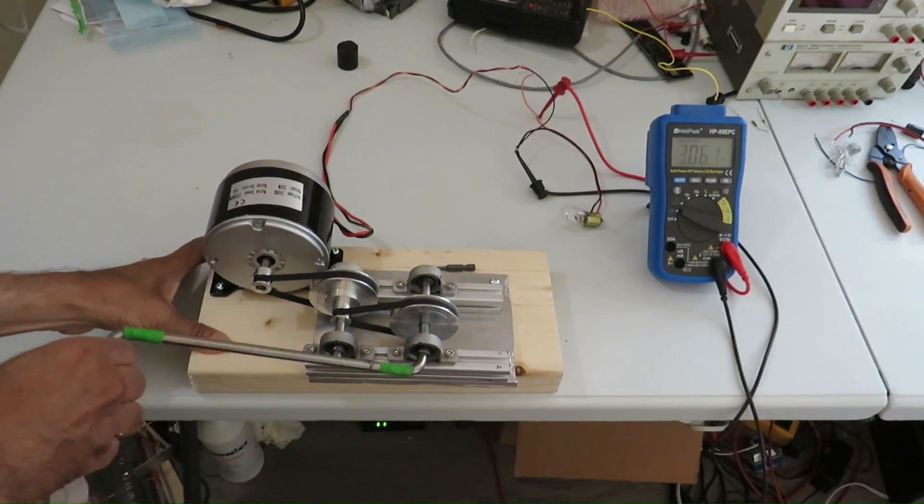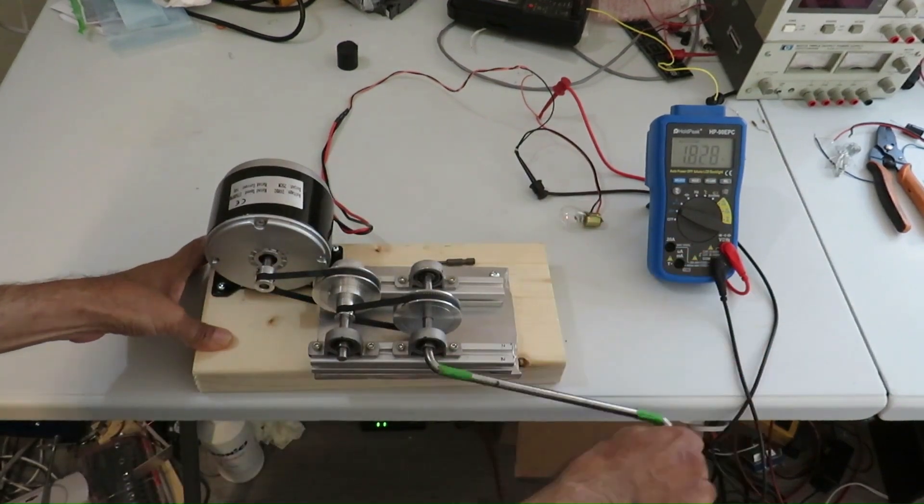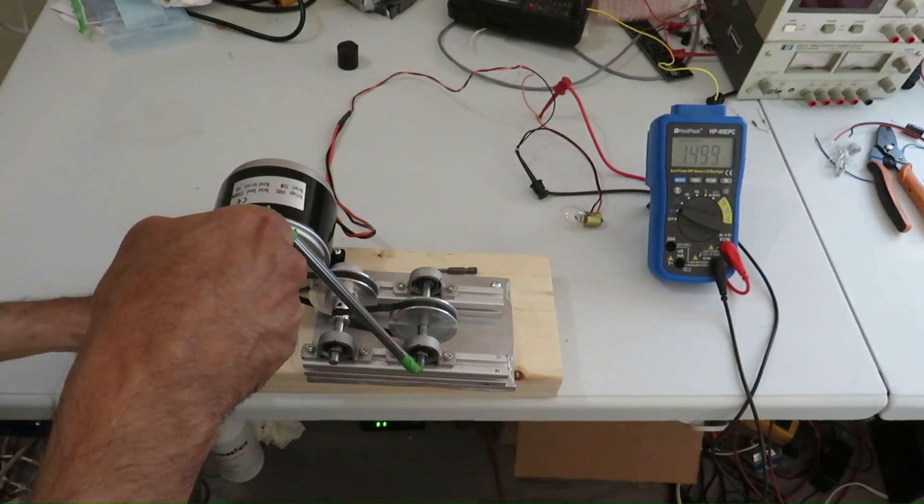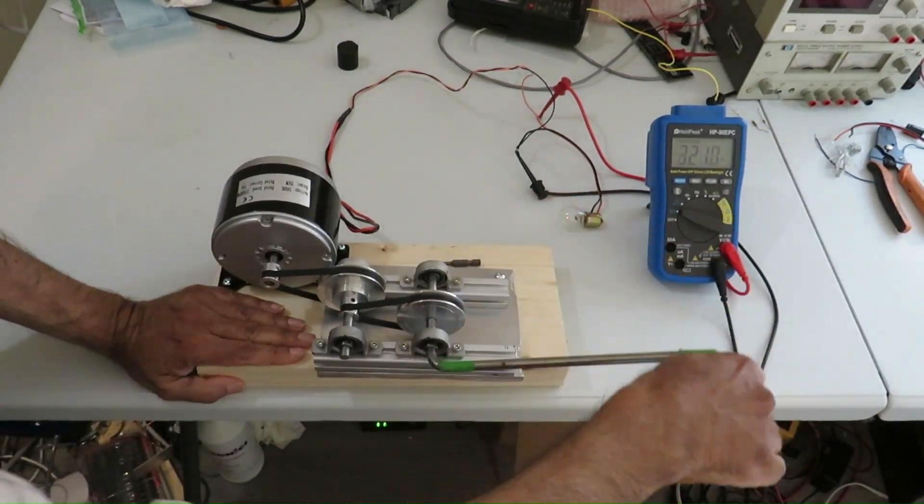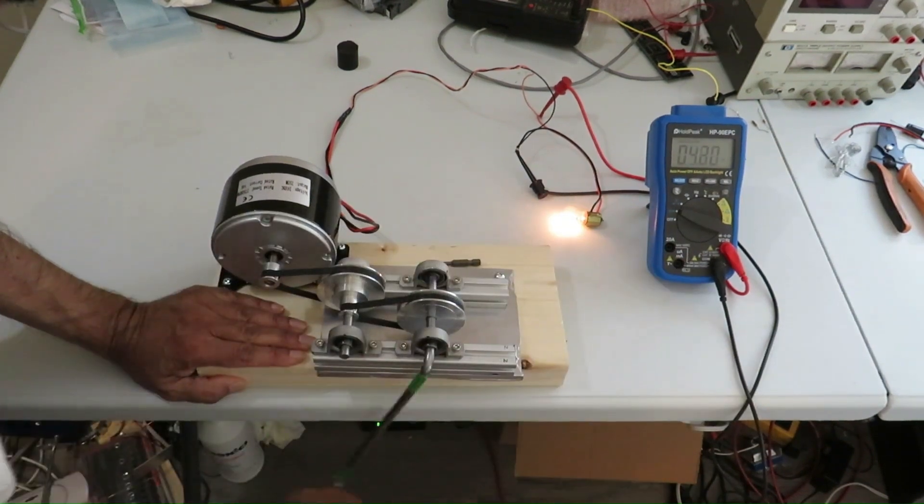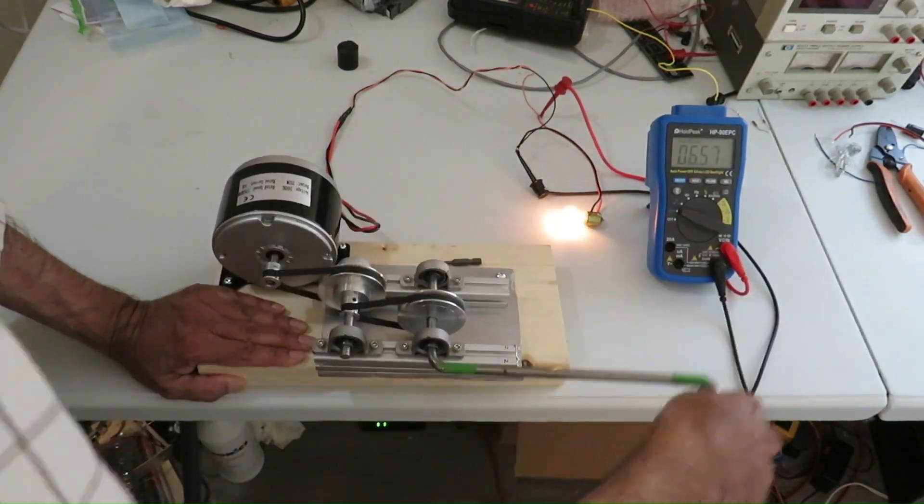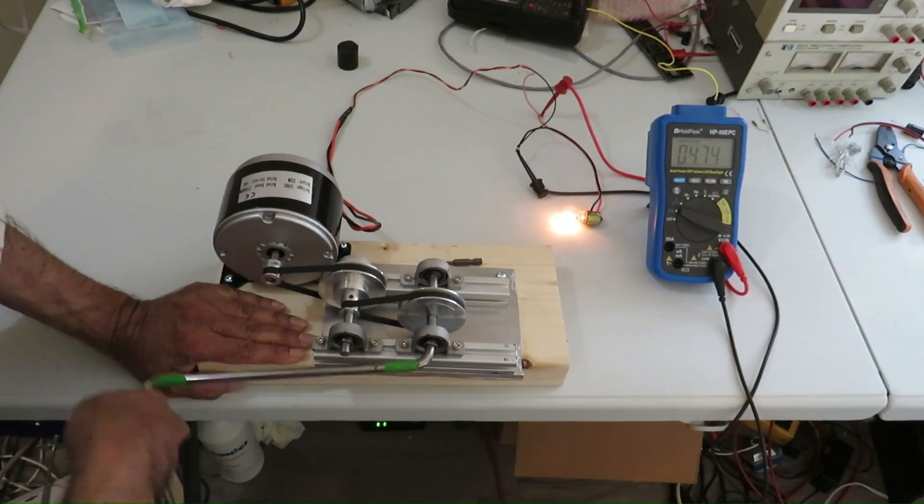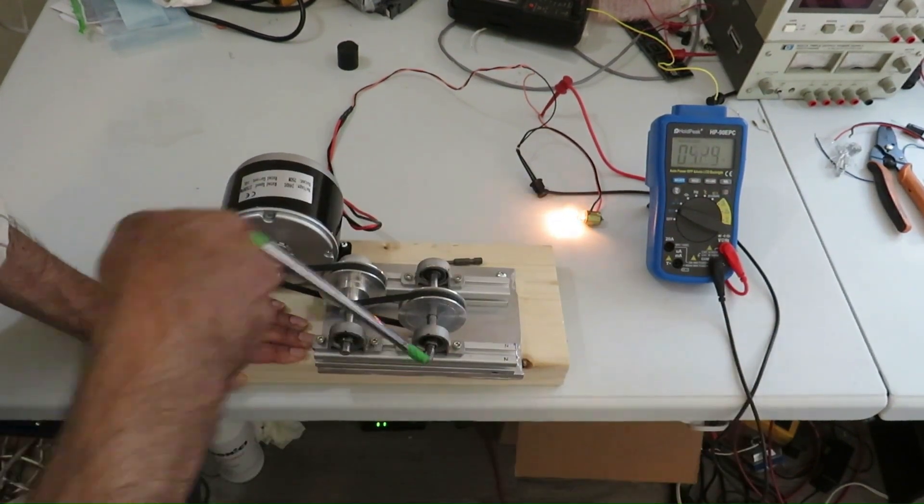And now a load is connected, it's a 6-volt lamp. Now it takes a little bit of effort as a lot of energy is needed to run the lamp.